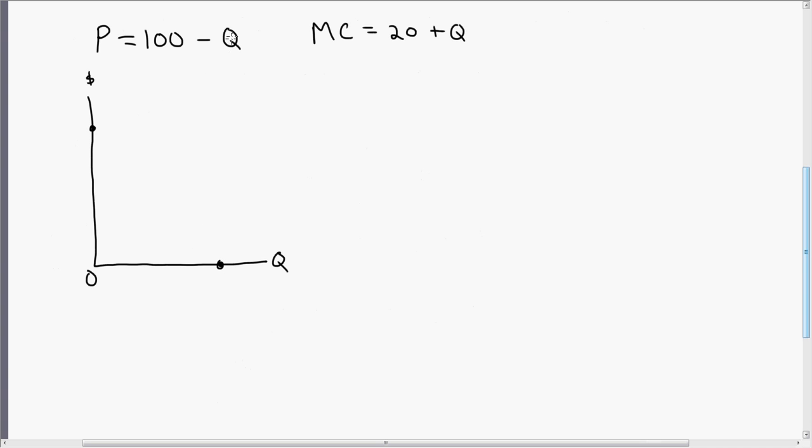If Q is 0, plug in 0 for Q. Price is 100. Set P equal to 0 to solve for Q. Q equals 100. So that's our demand curve.